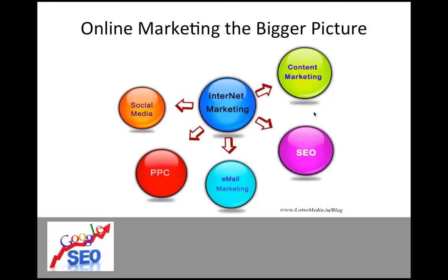SEO — search engine optimisation — is an element of internet marketing; it's getting you found on Google. You hear a lot of people throw around the term SEO, but SEO is not actually the umbrella term — internet marketing is, as you can see from this diagram. Email marketing is another one, things like MailChimp, and that's another example of content marketing.